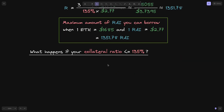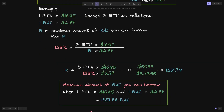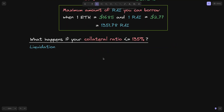We mentioned the minimum collateral ratio must be greater than 135%. But what happens if we go below that? When your collateral ratio is less than or equal to 135%, liquidation occurs. The ETH you locked inside the vault will be taken by the protocol and sold at auction. This means that if you borrow too much Rye, or the price of ETH drops, or the price of Rye rises too quickly, you'll lose your locked ETH.